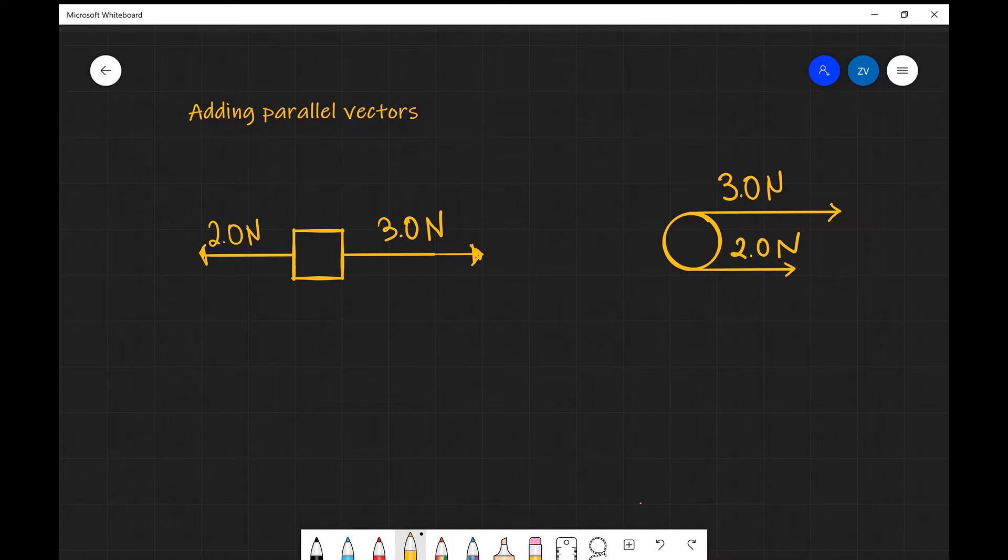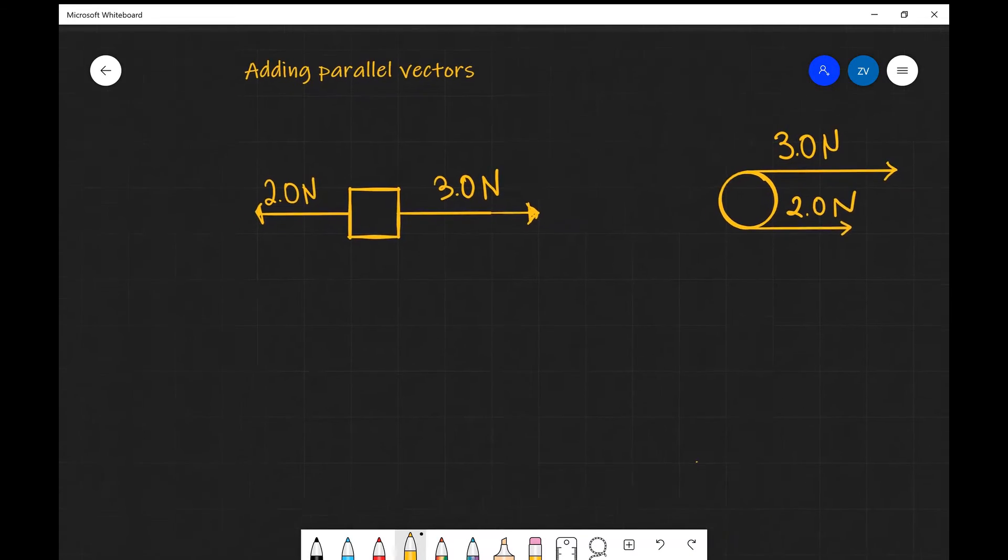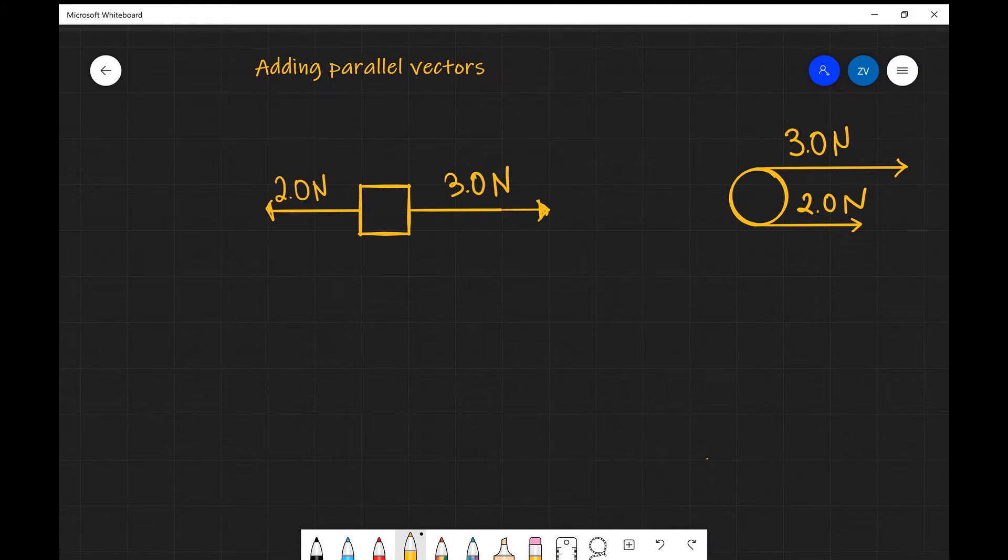Now the rule here is if the two vectors are in the same direction we're going to add them, if they're in the opposite direction we're going to take them away. For instance, we have an example here with a box and we have a 3 newton force acting to the left and a 2.0 newton force acting to the right. Because the two forces are in the opposite direction,